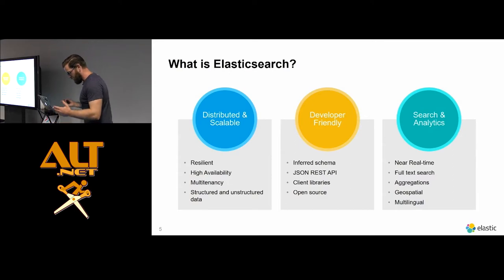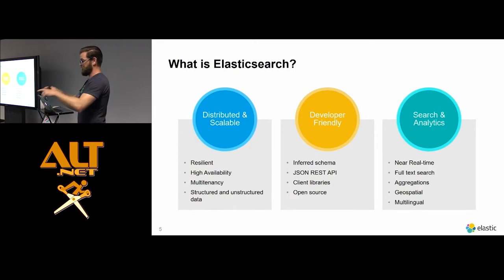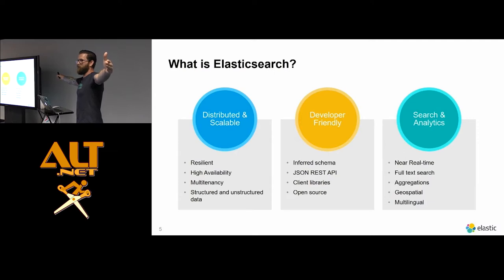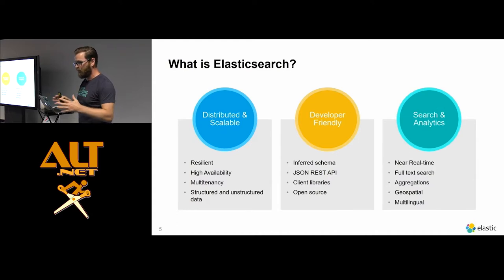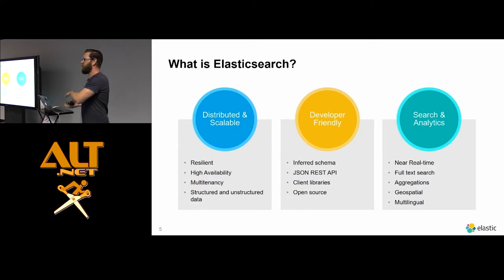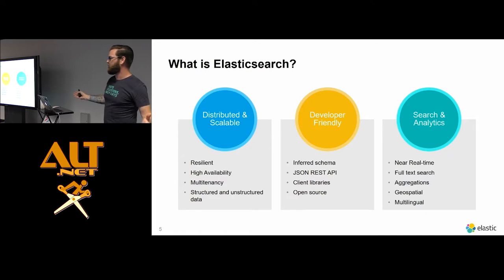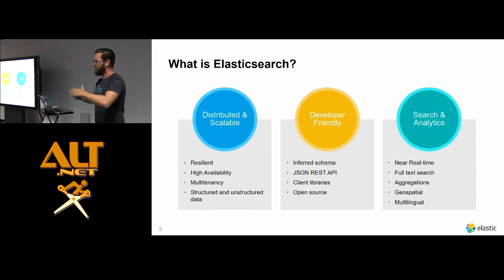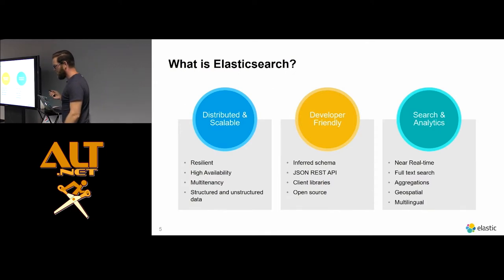Elasticsearch itself is essentially a distributed system. You can run it on a single machine or single node, multiple nodes on one machine, or distribute them across multiple machines. It's a distributed search analytics engine built on top of Lucene, which is a very mature search library. You can use Lucene directly if you want, but you don't get any of the distributed aspects - you're basically dealing with one inverted index. Elasticsearch builds on Lucene and takes it distributed, allowing scalability, resilience, and high availability.